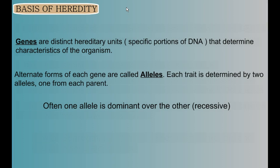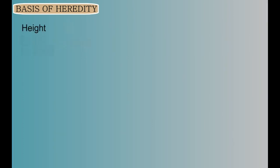Now let's summarize as we define some useful terms. Genes are distinct hereditary units — specific portions of DNA that determine characteristics of the organism. Alternate forms of each gene are called alleles. Each trait is determined by two alleles, one from each parent, and often one allele is dominant over the other.